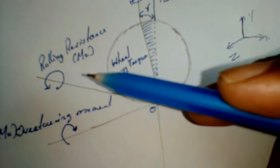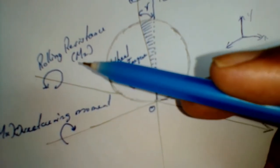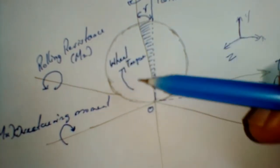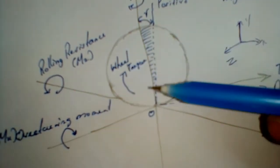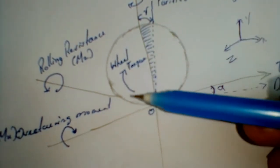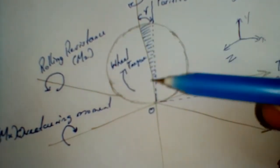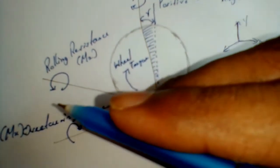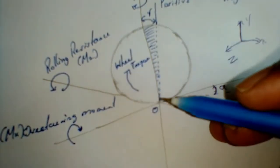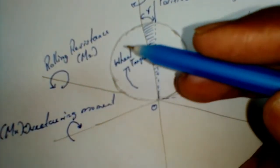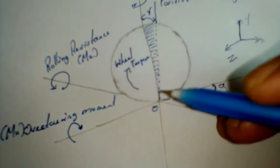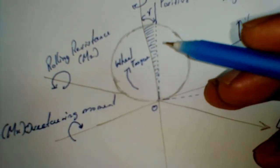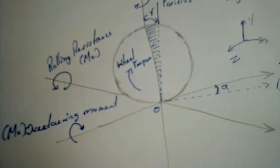The moment in the Z-axis is the rolling resistance, represented by M suffix Z. It is the resistance force that opposes the motion of the wheel or resists the wheel torque. It acts in the counterclockwise direction because the wheel torque acts in the clockwise direction, so the rolling resistance opposes the wheel torque.